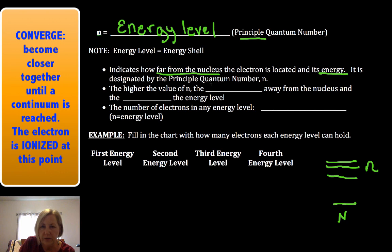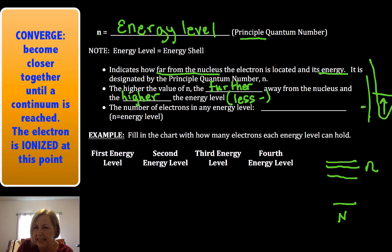The higher the value of N, the further from the nucleus you would find the electron on average, and the higher the potential energy. Its energy would be less negative, higher on a potential energy. Higher would be less negative.